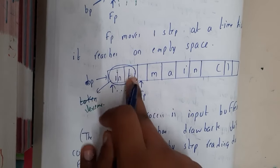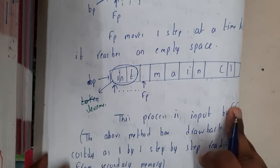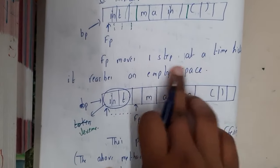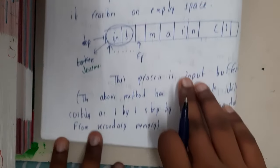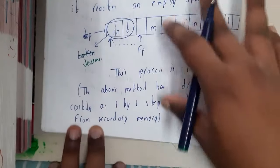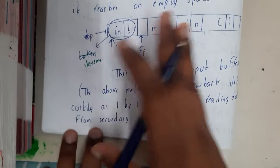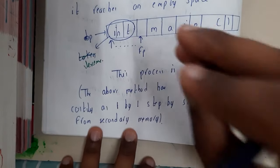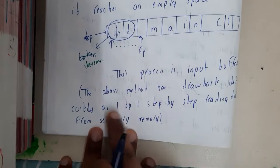This is the lexeme. The pointer moves one by one, and this process is nothing but input buffering. This process of moving the pointer and identifying the lexemes is input buffering.